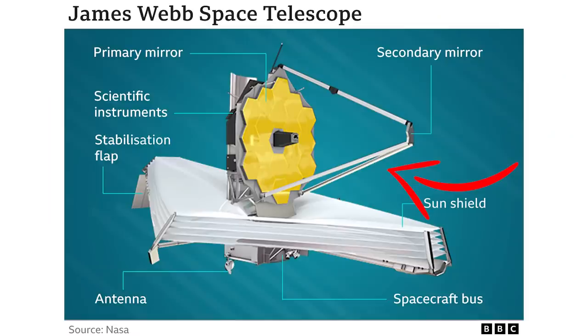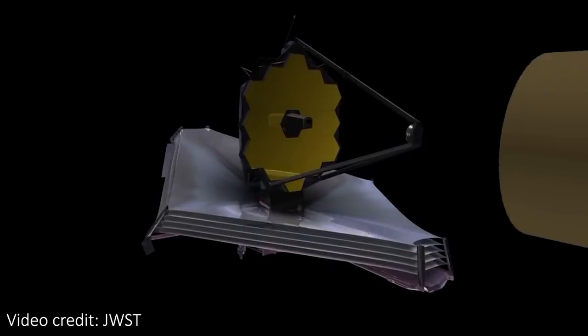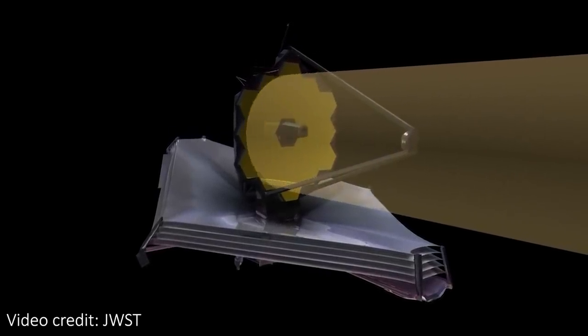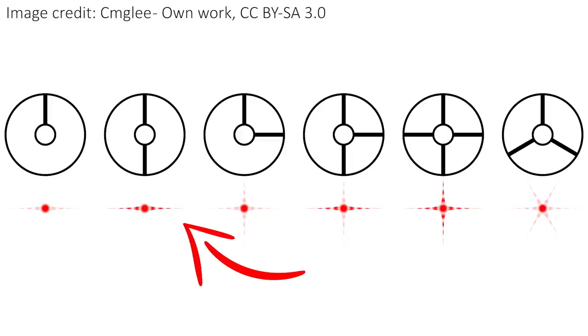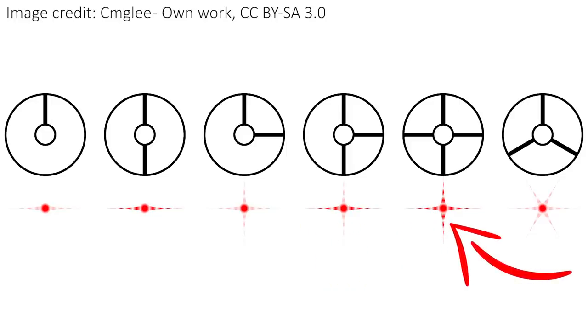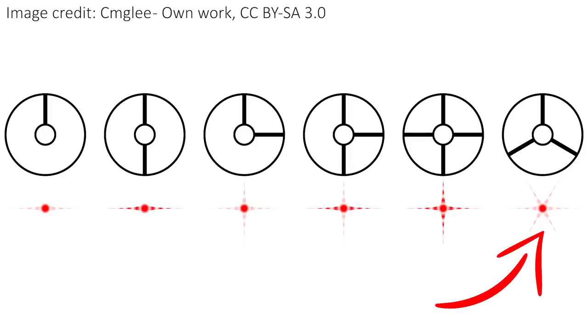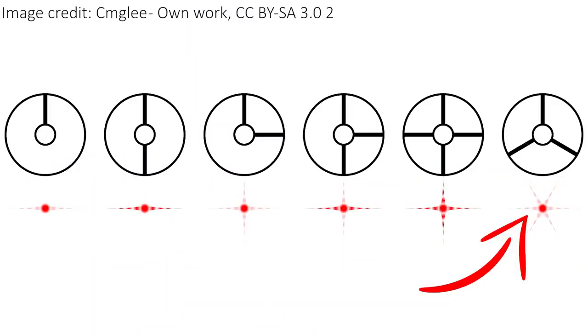The other source of diffraction spikes is actually the struts that hold up the secondary mirror. These struts block a little bit of light, causing a diffraction pattern as light has to bend around them to reach the mirror. Each strut produces a spike perpendicular to its direction — one strut gives two spikes, two struts in the same direction also give two spikes (though more noticeable). Three struts in a certain pattern produce six spikes, and this is exactly what happens for Webb: three struts holding up the secondary mirror lead to six spikes. For Webb, most of these spikes line up with those already produced by the hexagonal mirror, with the only additional ones being the horizontal spikes.